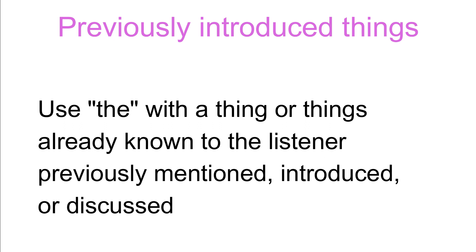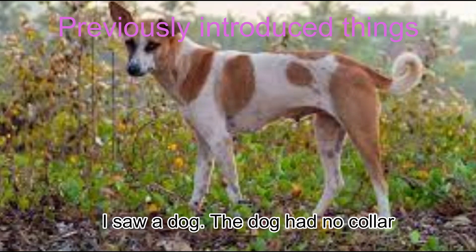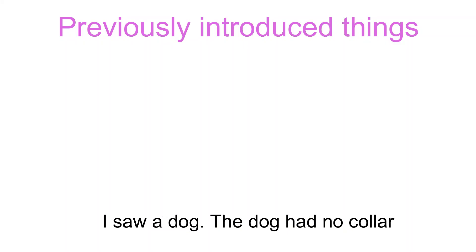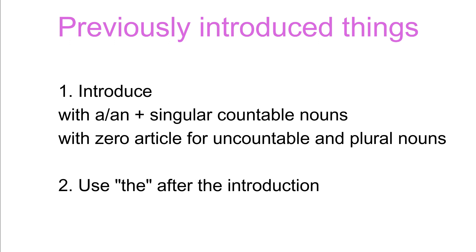Previously introduced things. We should use 'the' when we are talking about something which is already known to the listener or which has been previously mentioned, introduced, or discussed. For example: 'I saw a dog. The dog had no collar.' There are a few ways to introduce a thing or things — use an indefinite article with singular countable nouns and zero article with uncountable nouns and plural nouns. Once introduced, we need to use 'the' to talk about them. When using 'the' to talk about already introduced things, we do not need to use exactly the same noun word.